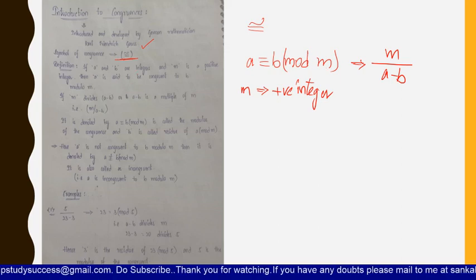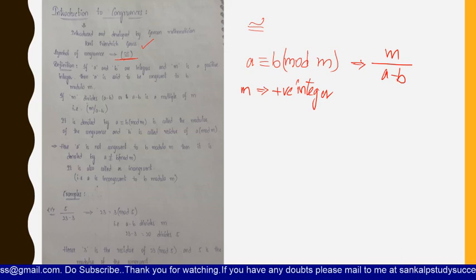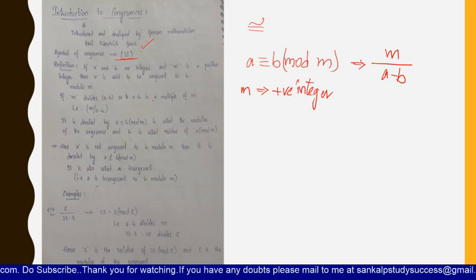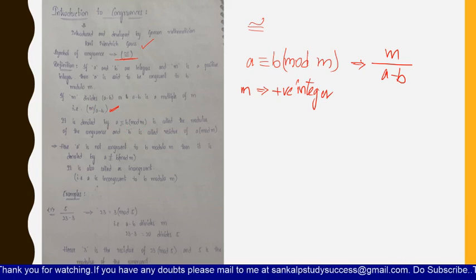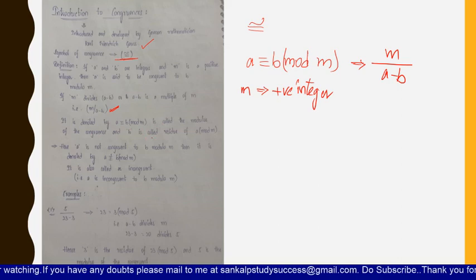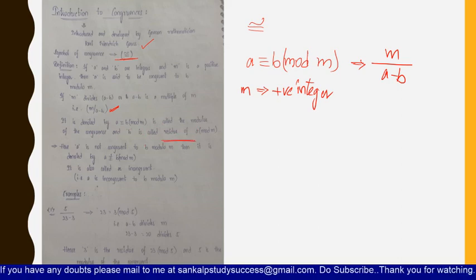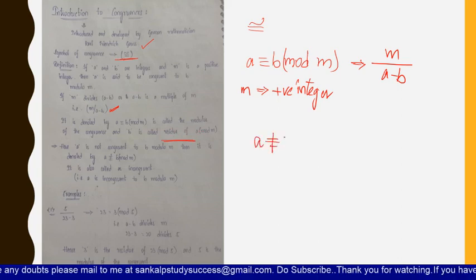If a and b are integers and m is a positive integer, a is said to be congruent to b when m divides a minus b, or equivalently, a minus b is a multiple of m. If this is true, m is called the modulus of the congruence, and b is known as the residue of a modulo m — you can also think of it as a remainder.